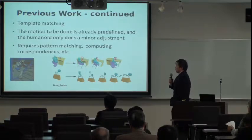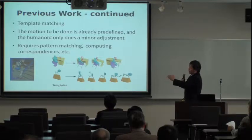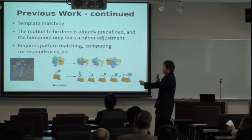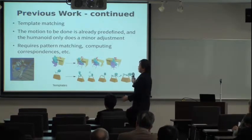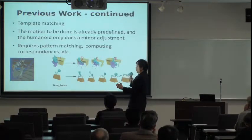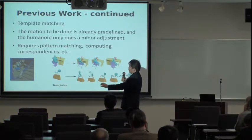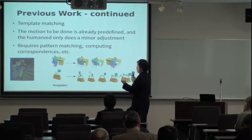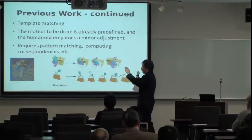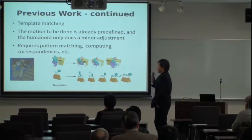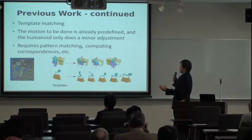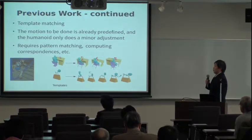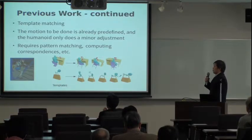For robotics, most approaches use template matching. They have simple example motions, recognize the scene, and when they see something like a hook, they look into a dictionary to find the closest match and mimic that motion. This is not very smart because you have to prepare lots and lots of examples in the database and find the appropriate one. These are the traditional ways of doing this, and we wish to change this pipeline.